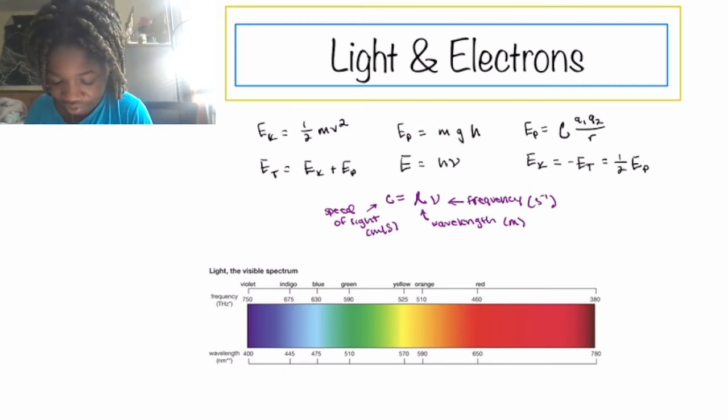So right now, violet has a frequency of 750. And I'm going to convert to our normal units of frequency. So it'll be times 10 to the 12th per second.